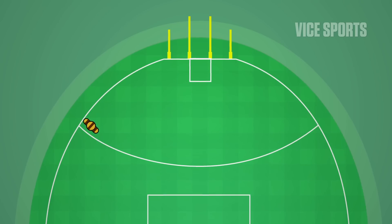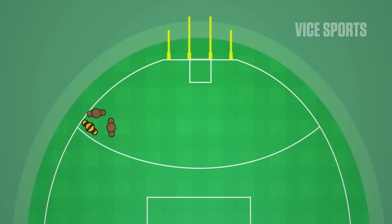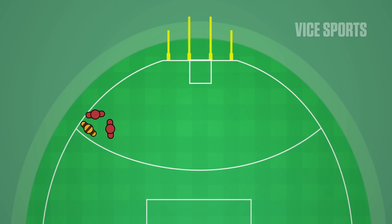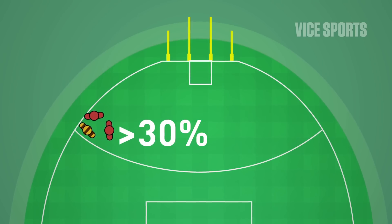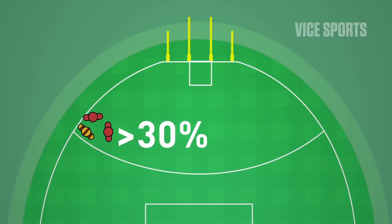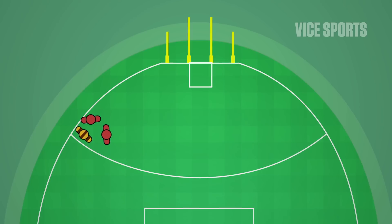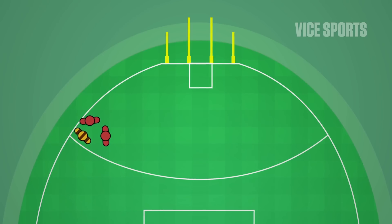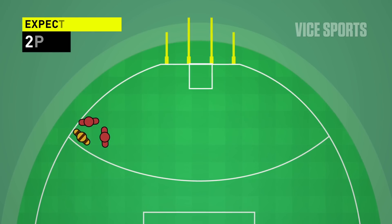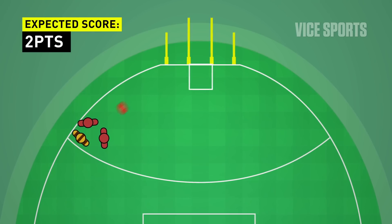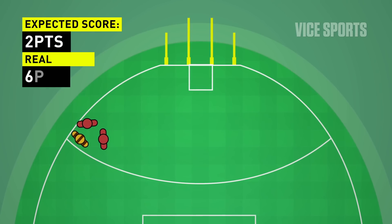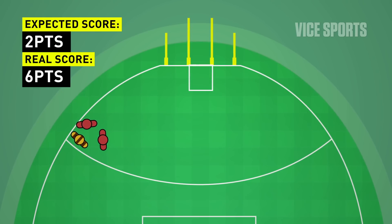This player is tight on the boundary, a long way out, under direct physical pressure. He's got less than a 30% chance of converting from here, which in expected score measures is around about two points. When he converts to six, it's a bonus for the team.